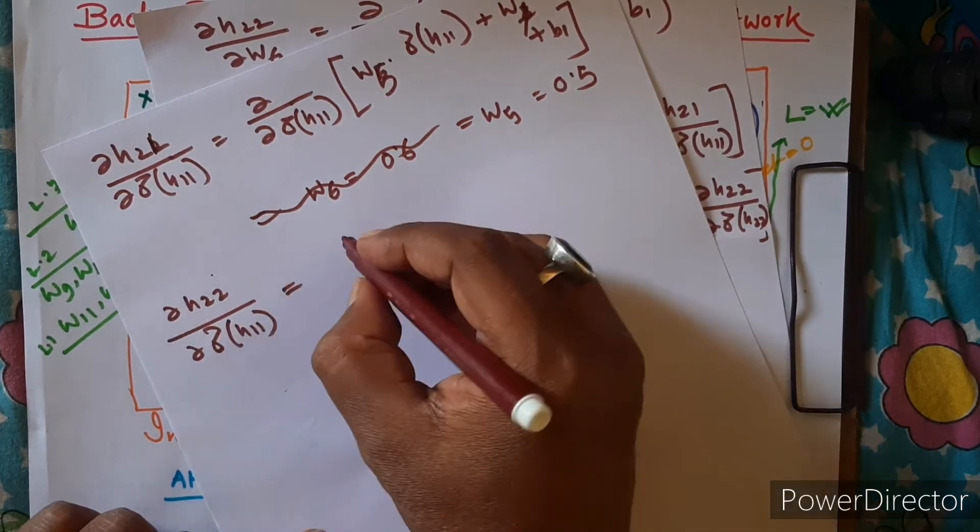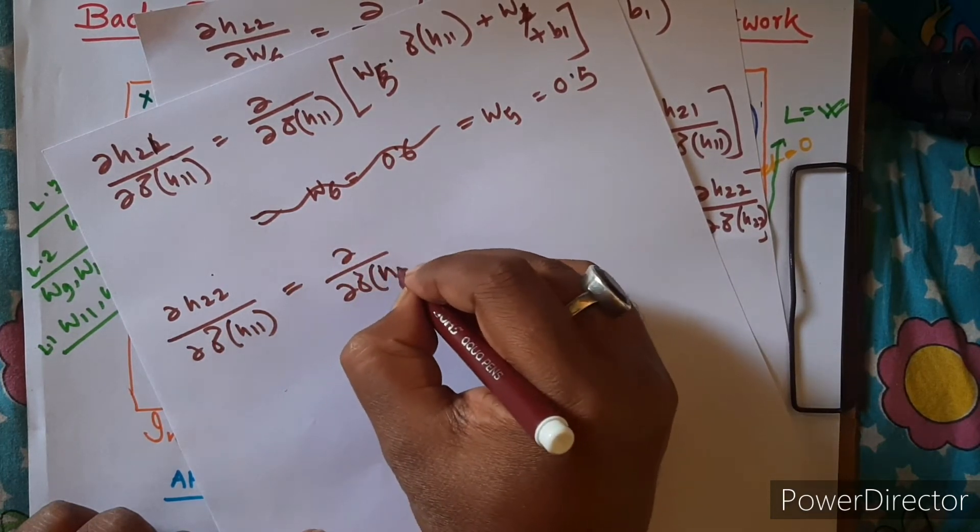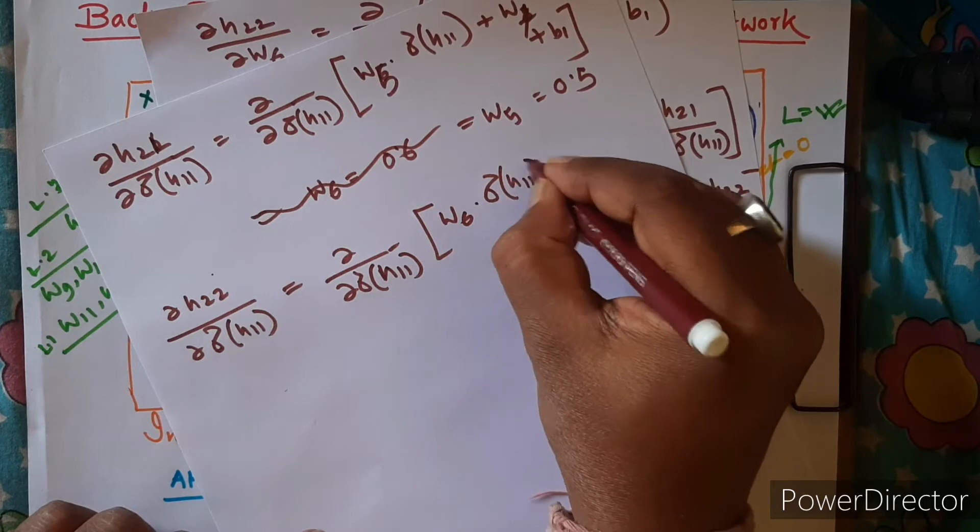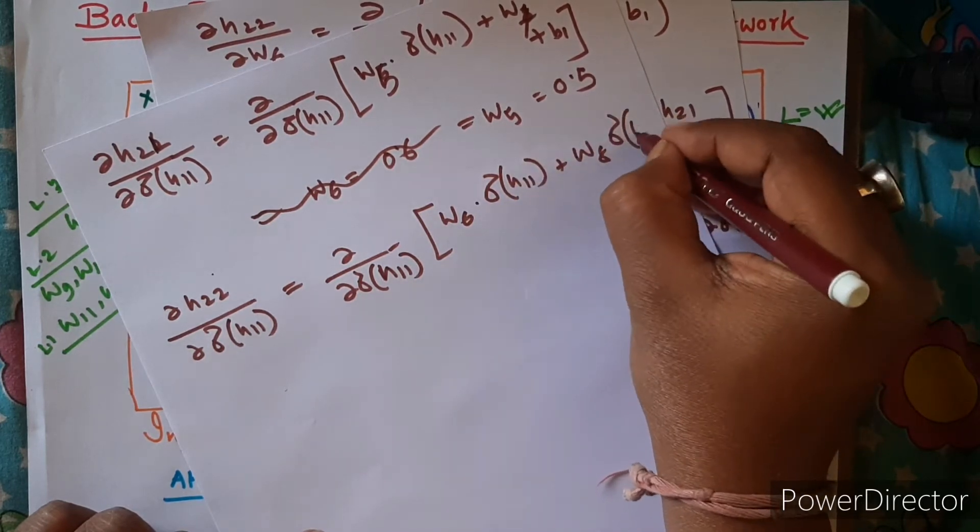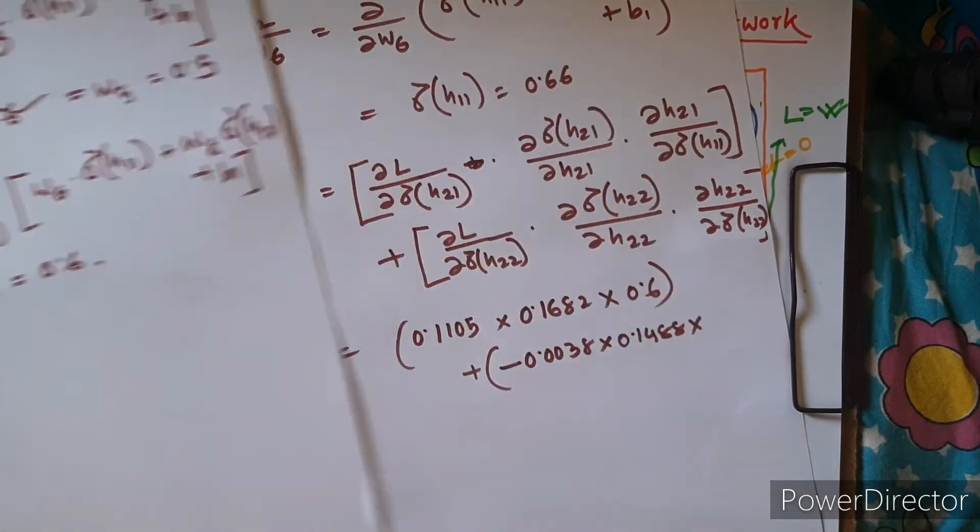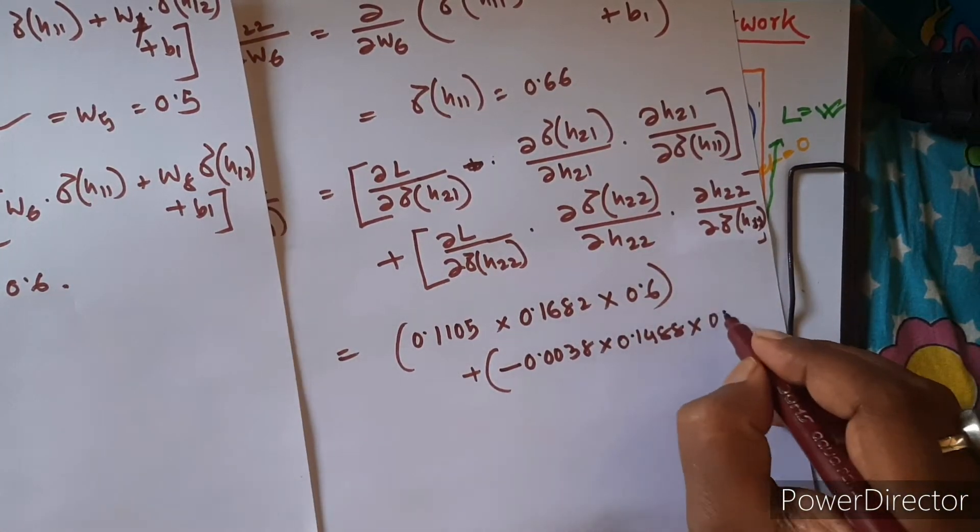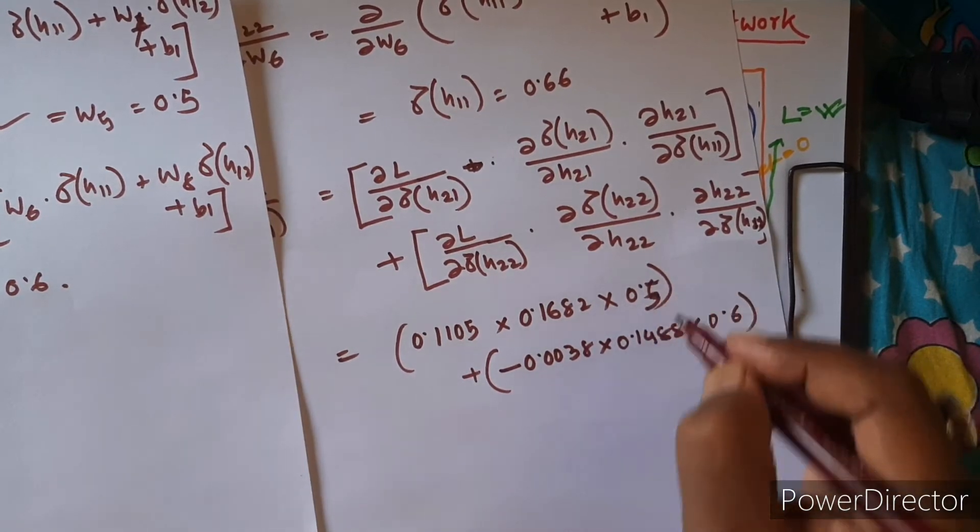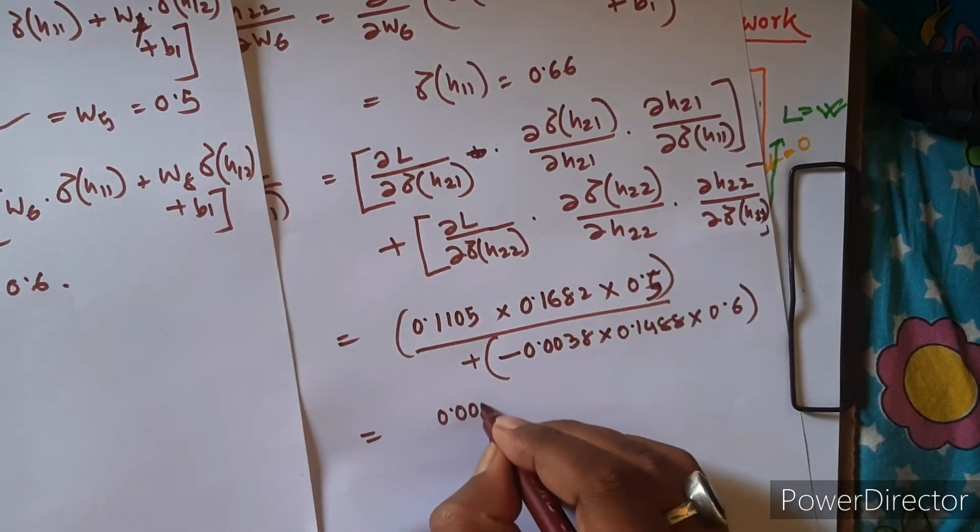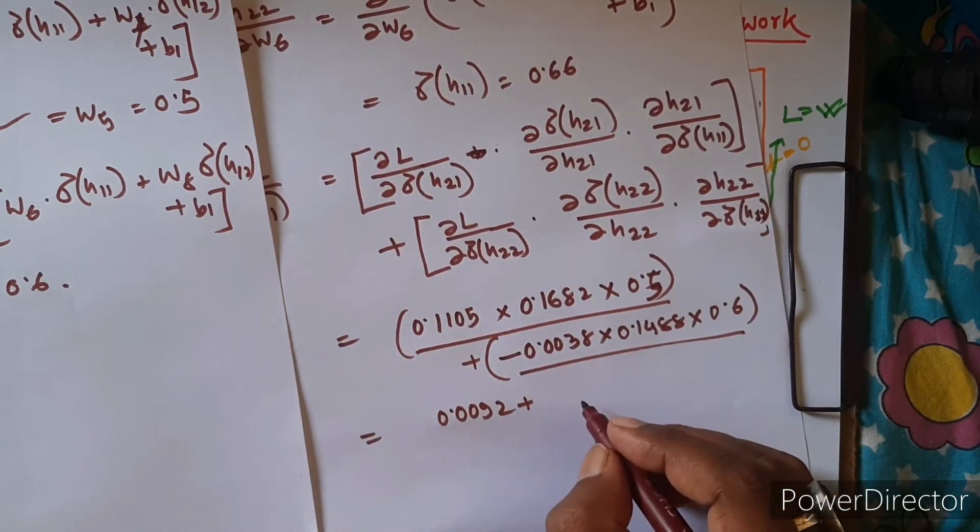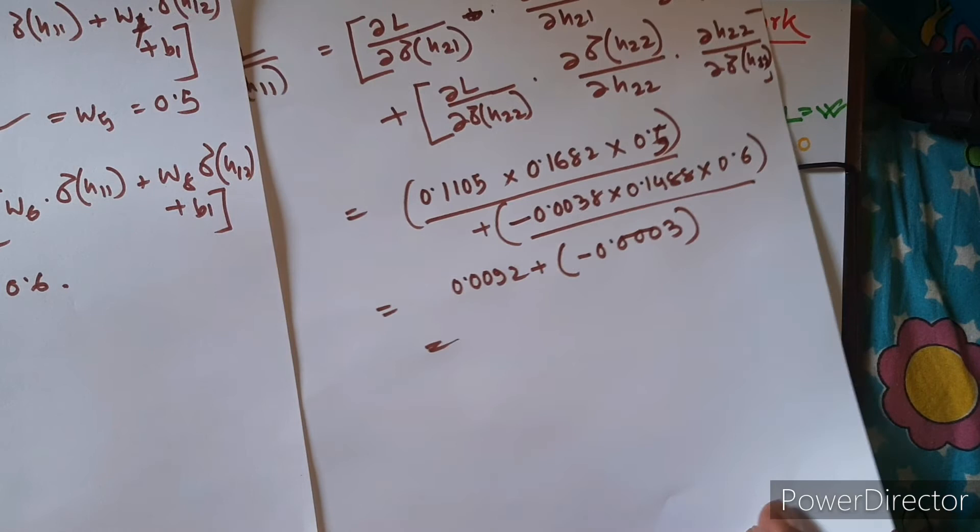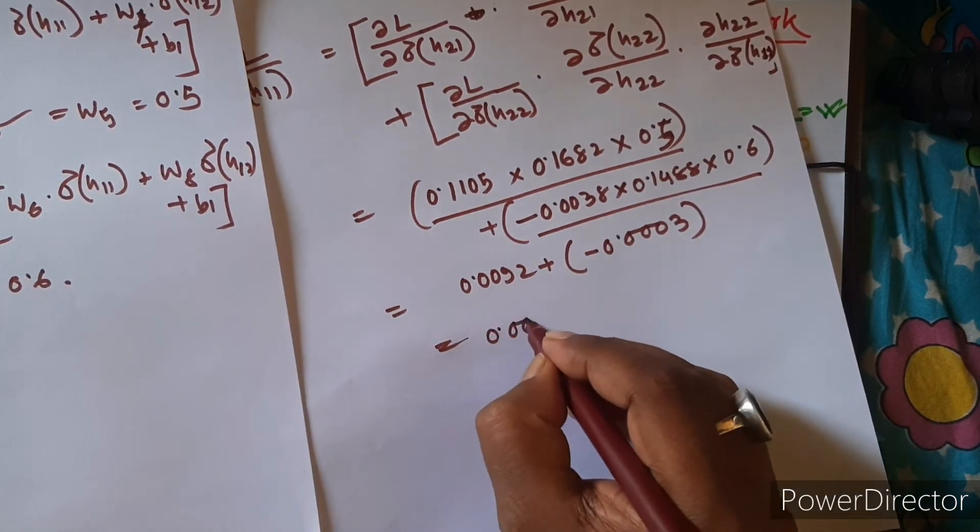With respect to sigma of H11, it will be sigma of H11, and then we have the other one that we have already written. So it will be actually W6 is equal to 0.6, so 0.6. And this will be actually 0.5. So it will be at the end, this portion will be 0.0092, and this portion will be minus 0.0003. So at the end it will be 0.0089.